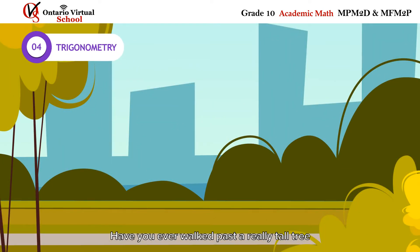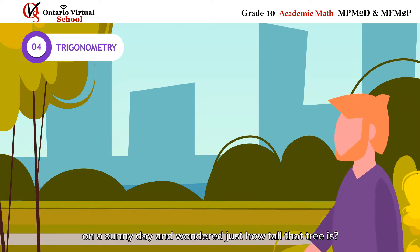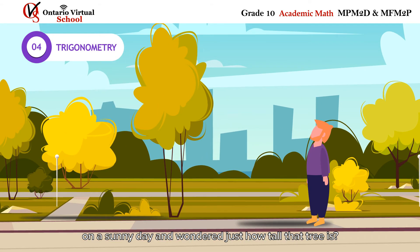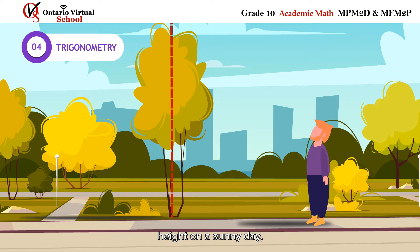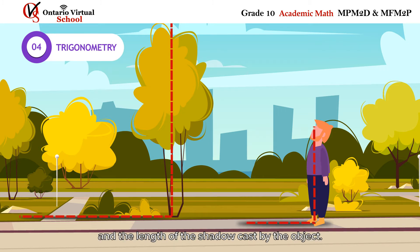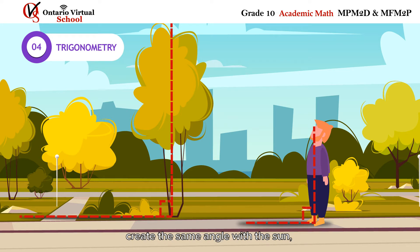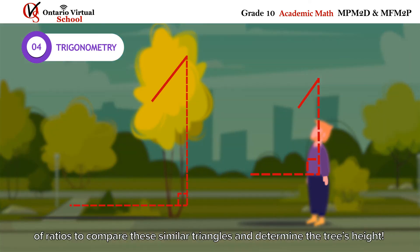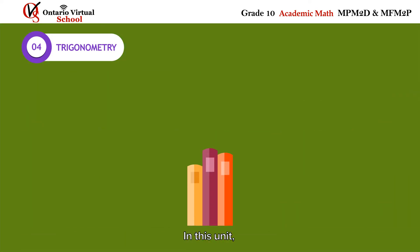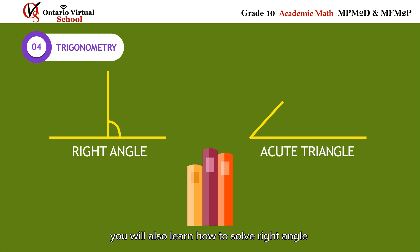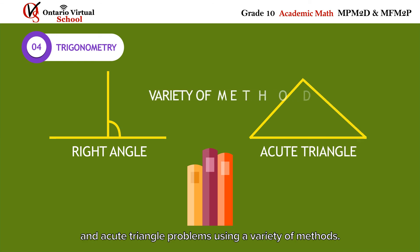Trigonometry: Have you ever walked past a really tall tree on a sunny day and wondered just how tall that tree is? You can actually use trigonometry to help you figure it out. To calculate any object's height on a sunny day, simply measure your height, the length of your shadow, and the length of the shadow cast by the object. Since your shadow and the object's shadow create the same angle with the sun, you can use your knowledge of ratios to compare these similar triangles and determine the tree's height. In this unit, you will also learn how to solve right angle and acute triangle problems using a variety of methods.